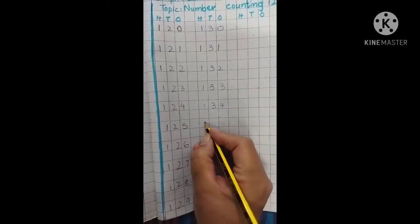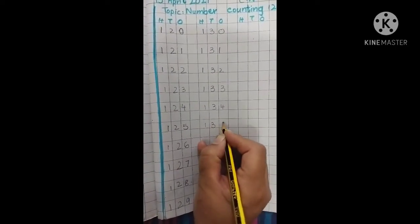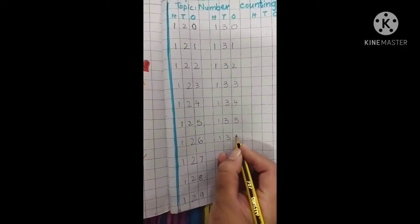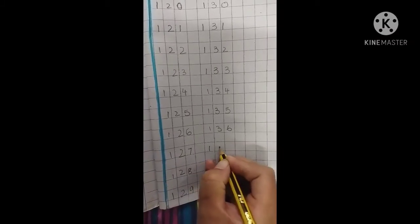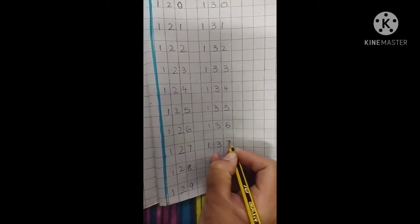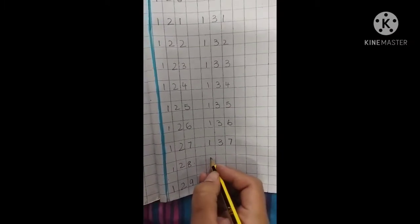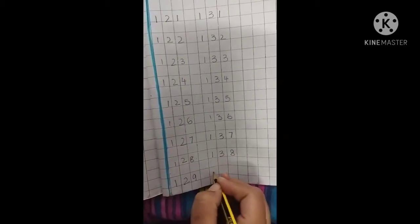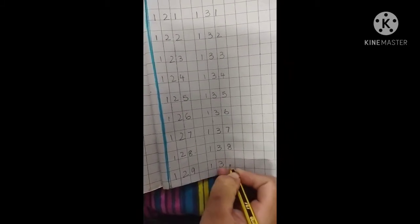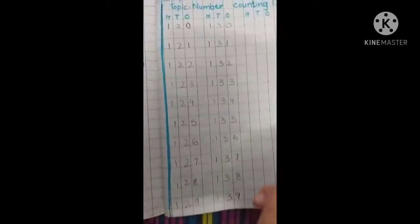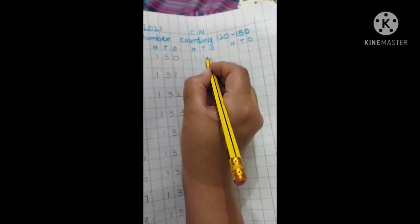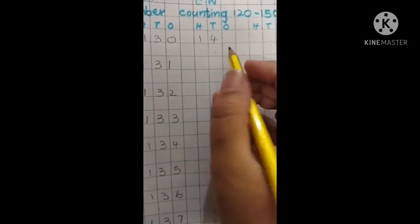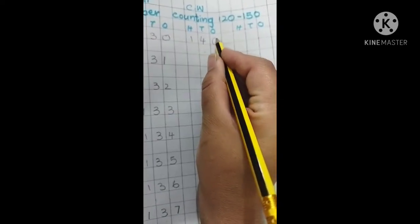135, 136, 137 - 7 is straight like this. 138, and then again 139. Here comes 140. Yes, you will write 4 like this and 0 here - 140.